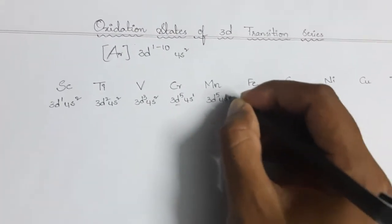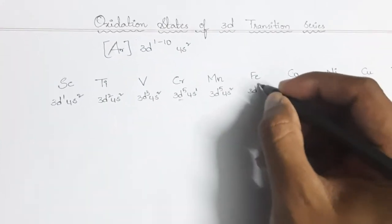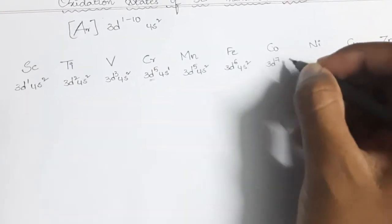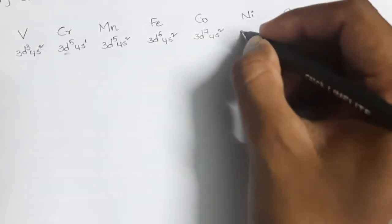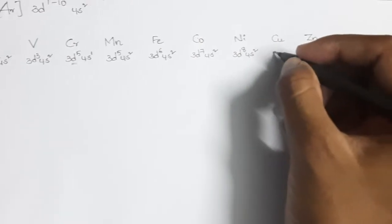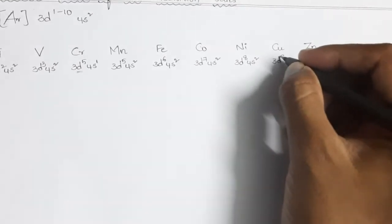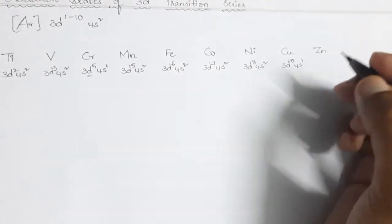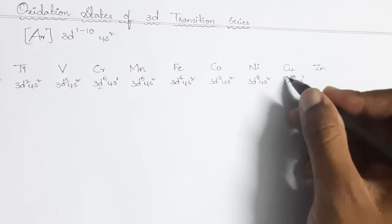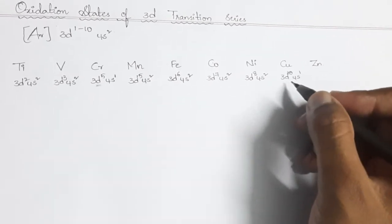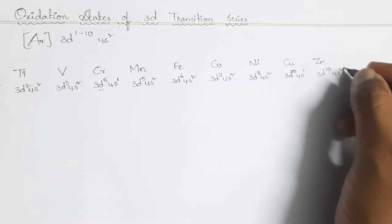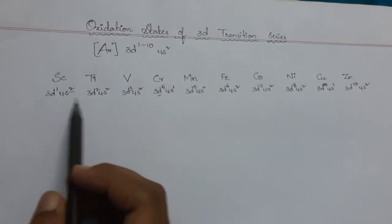Manganese is 3d⁵ 4s², iron is 3d⁶ 4s², cobalt is 3d⁷ 4s², nickel is 3d⁸ 4s². Copper is 3d¹⁰ 4s¹ — one electron from the 4s orbital jumps to 3d, making it completely filled and more stable. Zinc is 3d¹⁰ 4s². Based on these electronic configurations, we can determine the oxidation states of these elements.